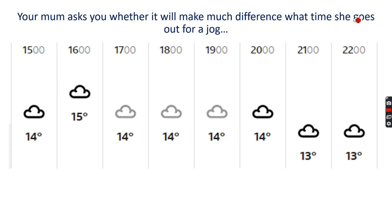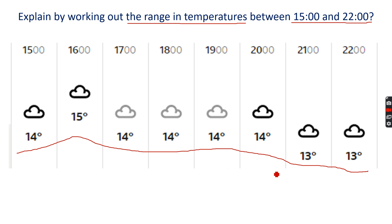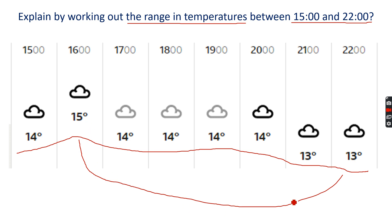My mum's asking me whether it matters what time she goes out for a jog. The maths here is to work out the range in temperatures for the whole time period. Looking at all of these temperatures, the range goes from the lowest at 13 up to the highest at 15 — a range of two degrees Celsius. So it probably doesn't really matter when she goes out, because it's all pretty much the same — only two degrees different between the hottest and the coldest.